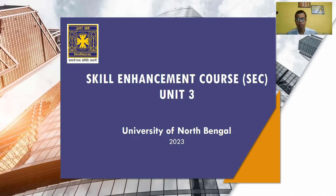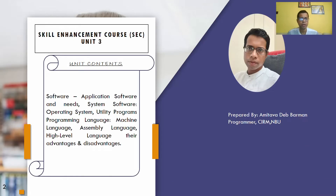Hello everybody, this is Amitabu. I am your guide to Unit 3 of the Skill Enhancement Course under North Bengal University. In this session, I am going to demonstrate application software and its needs, system software such as operating system, utility programs, and programming languages such as machine language, assembly language, and high-level language, their advantages and disadvantages.